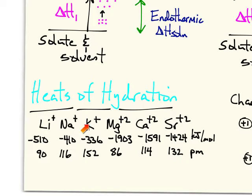When we go from lithium to sodium to potassium, obviously the charge is staying the same. Then when we jump to magnesium, calcium, and strontium, we are changing the charge. When we go from lithium to sodium to potassium, the size of the ion is getting larger. When we go from magnesium to calcium to strontium, the size of the ion is also getting larger. So we have two effects here that we have to pay attention to.